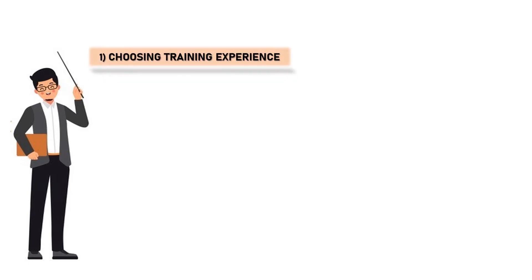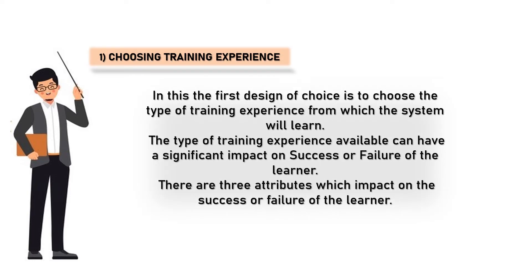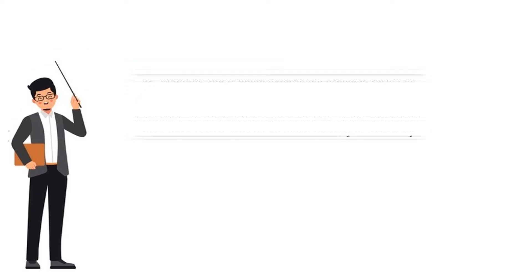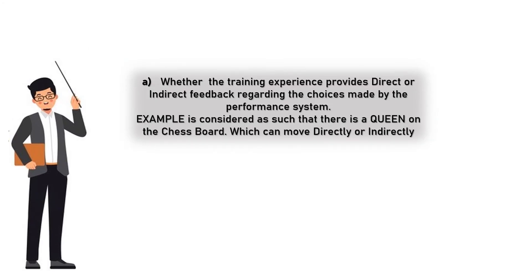Coming to one, choosing training experience. In this, the first design choice is to choose the type of training experience from which the system will learn. The type of training experience available can have a significant impact on success or failure of the learner. There are three attributes which impact the success or failure of the learner.